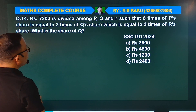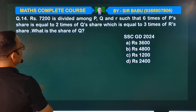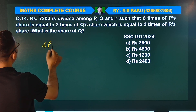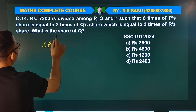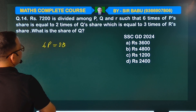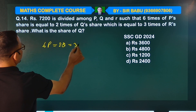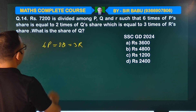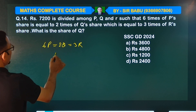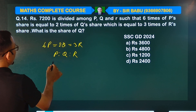7000 is divided among P, Q, R such that 6 times of P equals 2 times of Q, which equals 3 times of R. What is the share of Q? Find the P, Q, R ratio.